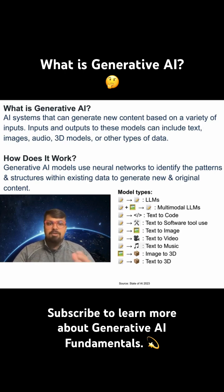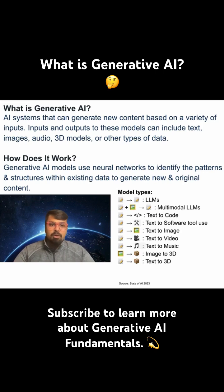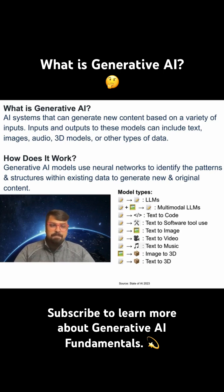Popular examples of generative AI models include GPT-4, which powers ChatGPT, Bard or Gemini from Google, LLaMA-2 from Meta, and also Stable Diffusion, which powers text-to-image generation.